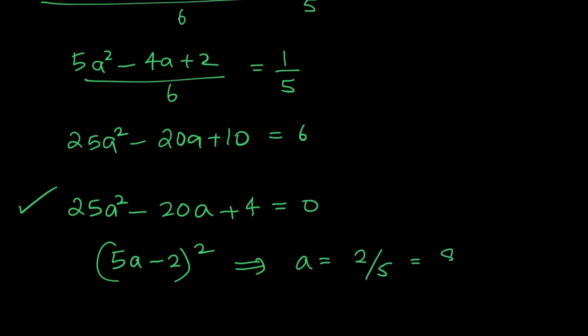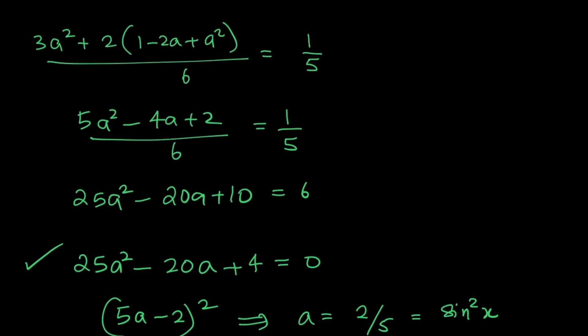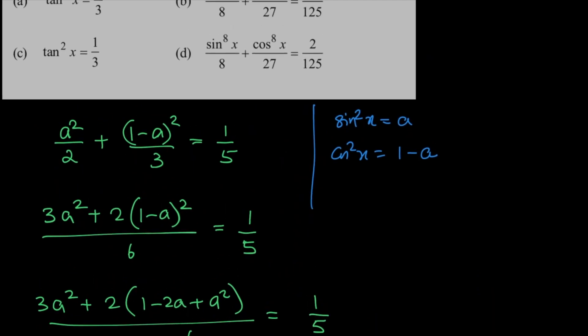So this is your sin square x. And so your cos square x is 3 by 5. Now we just need to check the options.